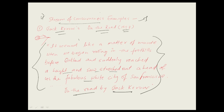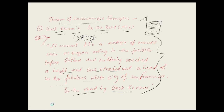Stream of consciousness is a technique where a writer writes down thoughts in sequence — whatever comes to mind. Jack Kerouac was actually typing, not writing by hand, and he described many things in a row. This technique is found frequently in Modernism as well.